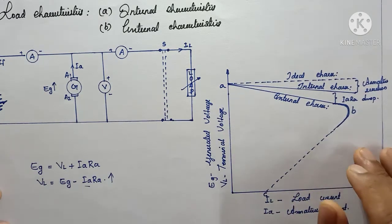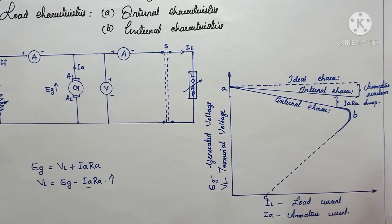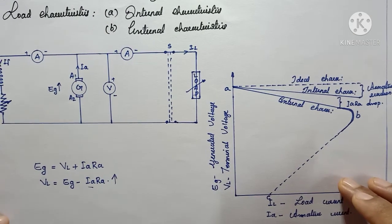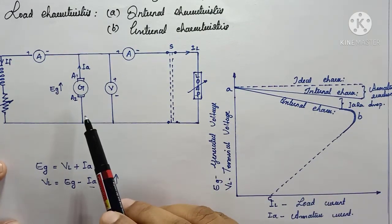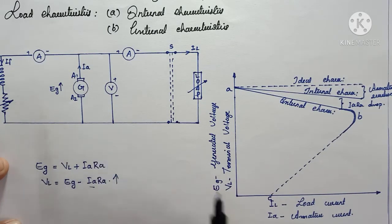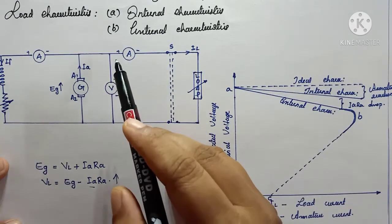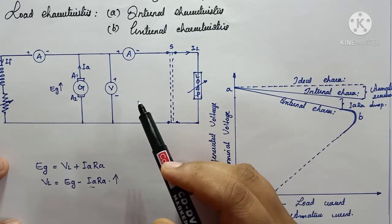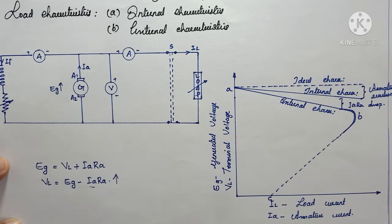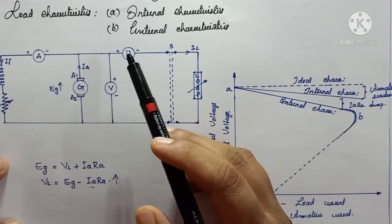These are the major load characteristics of a DC shunt generator, which are almost similar to those of a separately excited generator and a series generator. Note that the internal characteristics cannot be easily measured using a voltmeter, so practically it is not possible to perform the internal characteristics experiment — it is only theoretical. However, for external characteristics, we can perform the experiment in the laboratory by measuring terminal voltage with a voltmeter and load current with an ammeter.